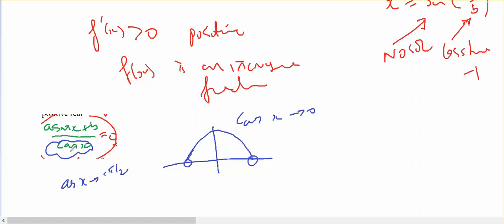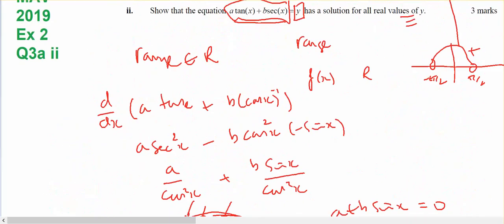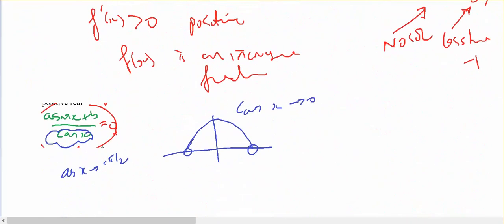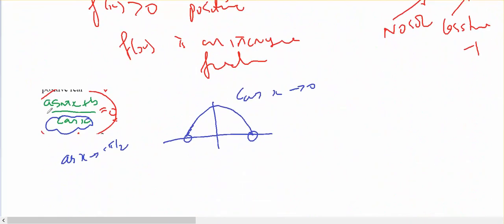And since a is bigger than b, a is going to approach a sine value which is one. So it should be positive, approaching an asymptote.